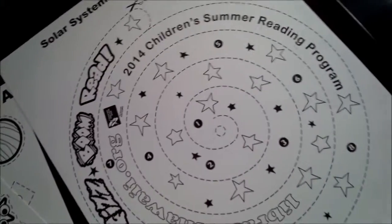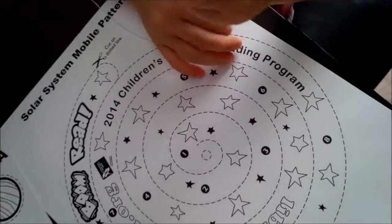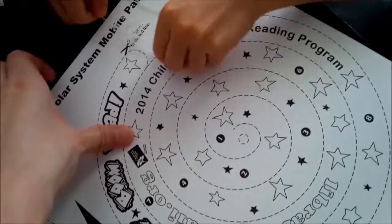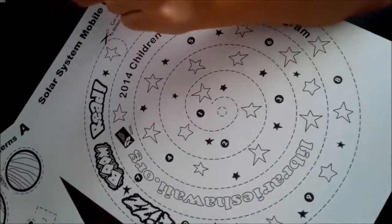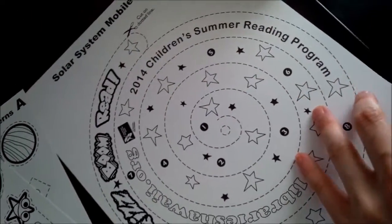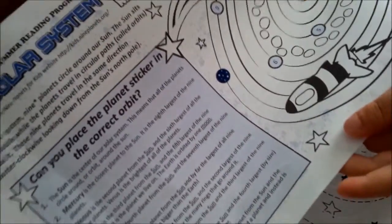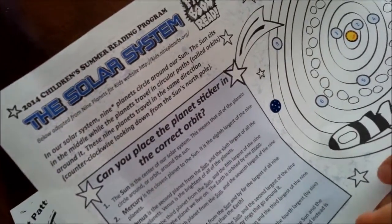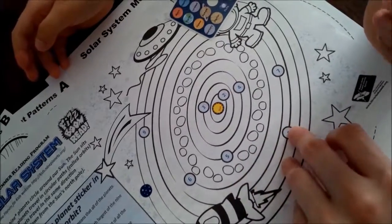This is the pattern where they say it's a library reading program. This is what they gave him for the last summer reading program 2014. This is pretty much learning about the solar system, especially since he loves solar system.